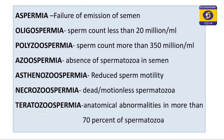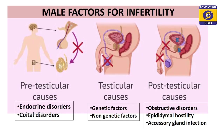Asthenozoospermia means reduced sperm motility, so the number of sperms travelling to the fallopian tubes decreases. Necrozoospermia means spermatozoa are dead or motionless. Teratozoospermia means there are anatomical abnormalities in around 70 percent of the spermatozoa discharged. Now let us quickly come to the male factors of infertility.